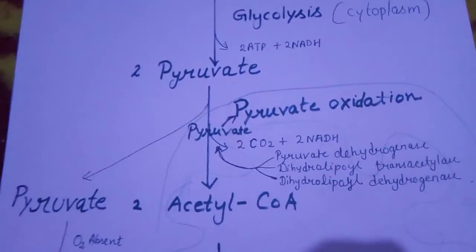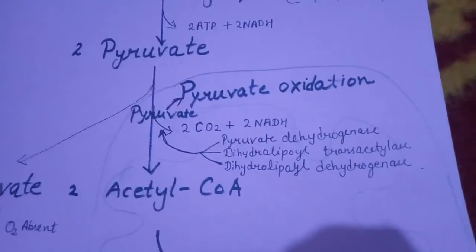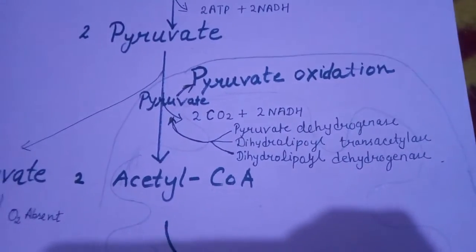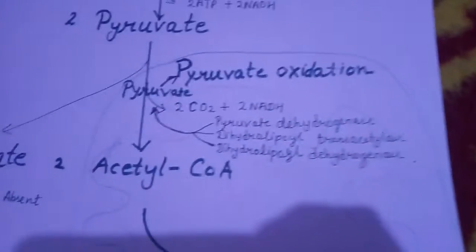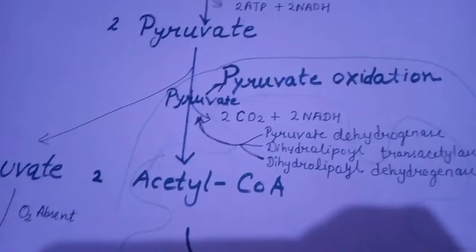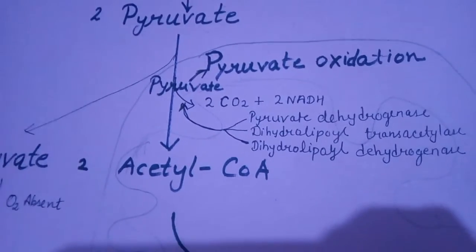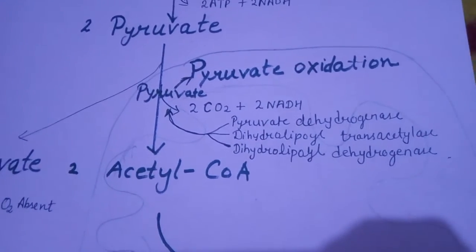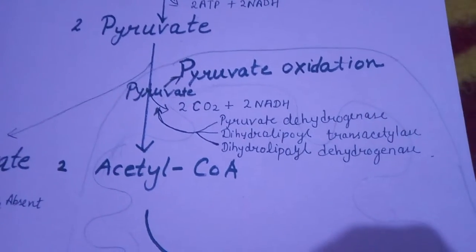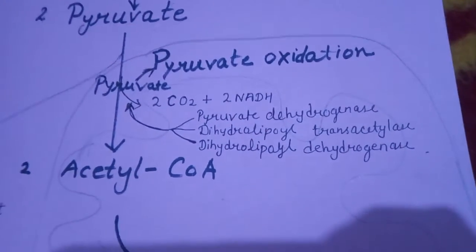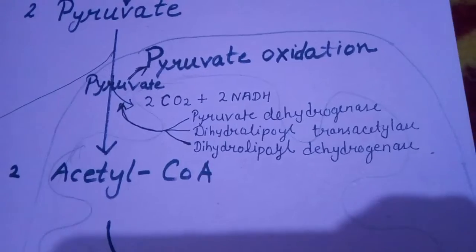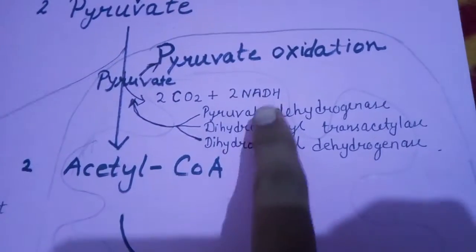This pyruvate enters into the mitochondria in the case of aerobic respiration. When it enters the mitochondria, it is converted into acetyl coenzyme A with the help of three enzymes.